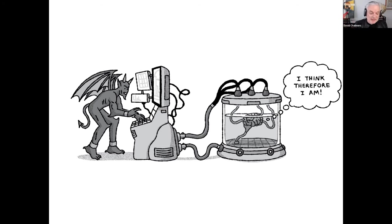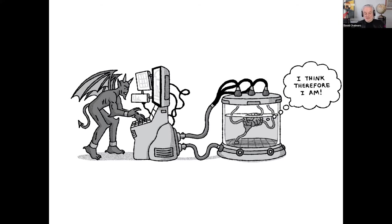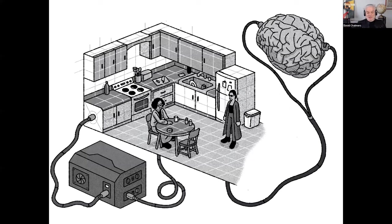Here's a high-tech version of the evil demon — all 57 illustrations in the book are by a marvellous illustrator, Tim Peacock, who did a great job bringing these philosophical scenarios to life. This Cartesian scenario shows a very high-tech evil demon using digital technology to fool a brain in a vat. The brain in the vat says 'I don't know anything about the stuff out there, but I know I'm here, I'm thinking, therefore I am' — and the simulation hypothesis is basically a high-tech updated version of Descartes' hypothesis.